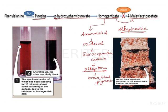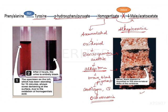Similarly, if alkapton bodies get accumulated or deposited in other parts of the body such as cartilages or connective tissues, that condition is called ochronosis. In the second picture you can see that in the intervertebral discs of the vertebra, the alkapton bodies — the brown-black pigments — are deposited. The first picture shows the blackening of urine upon standing: within the first 15 minutes the top layer starts turning brown-black, and after 2 hours the entire urine has turned black.